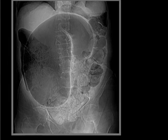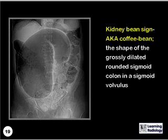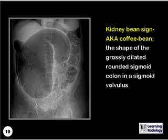What is the name of this sign? This is the kidney bean sign, also known as the coffee bean sign, which is the shape of the grossly dilated, rounded sigmoid colon in a sigmoid volvulus.